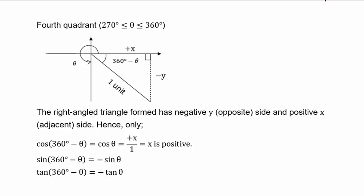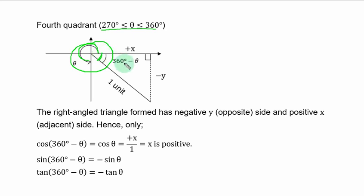Lastly, we have the fourth quadrant, that is between 270 degrees and 360 degrees. The whole of this angle is theta and everything here is 360 degrees. If from here to this point is theta, this remaining part becomes 360 degrees minus theta. Here the y-axis is negative and the x-axis is positive, with the hypotenuse always one.